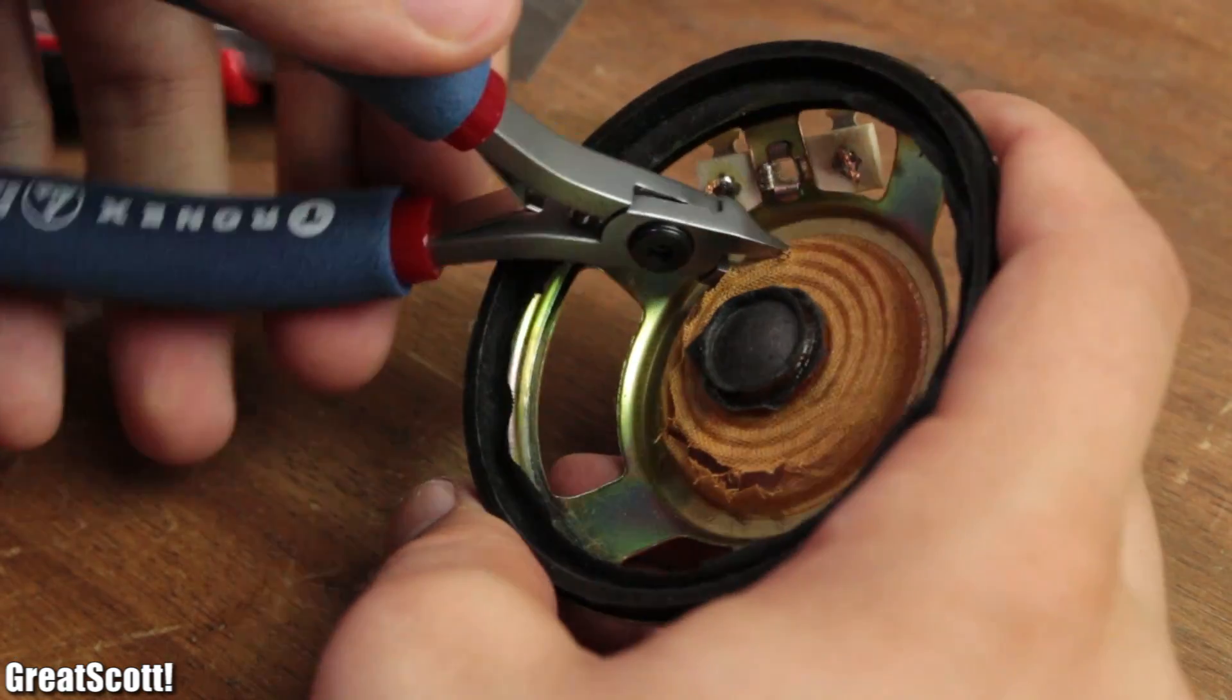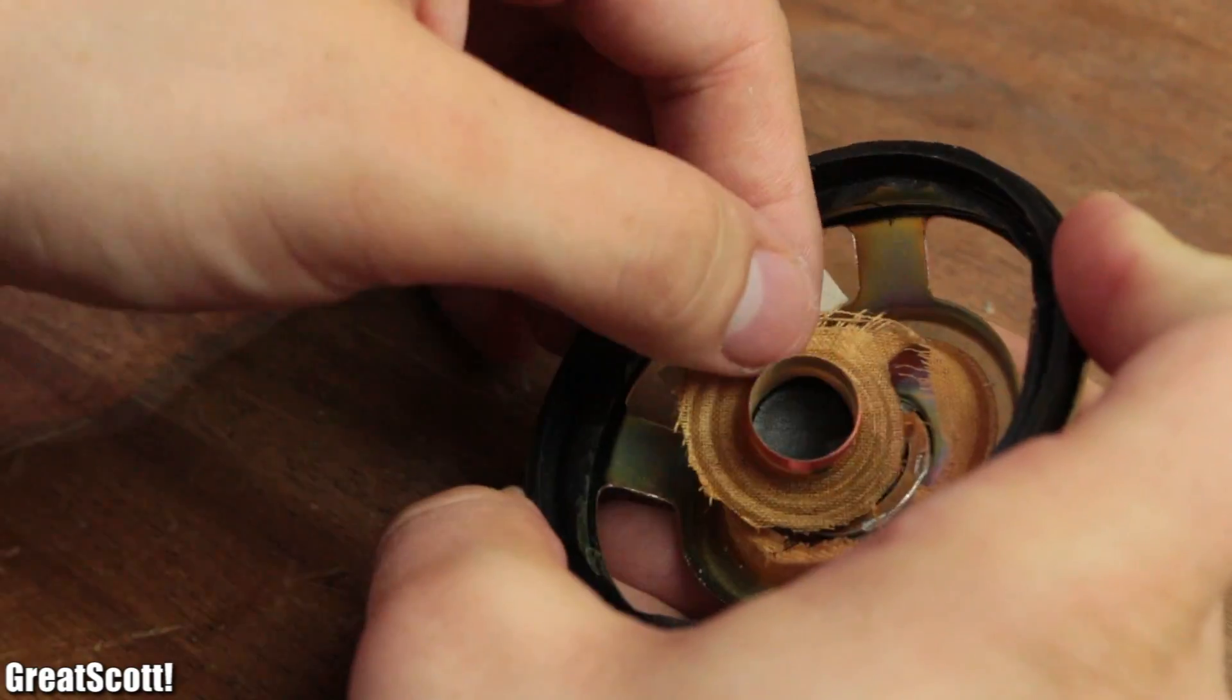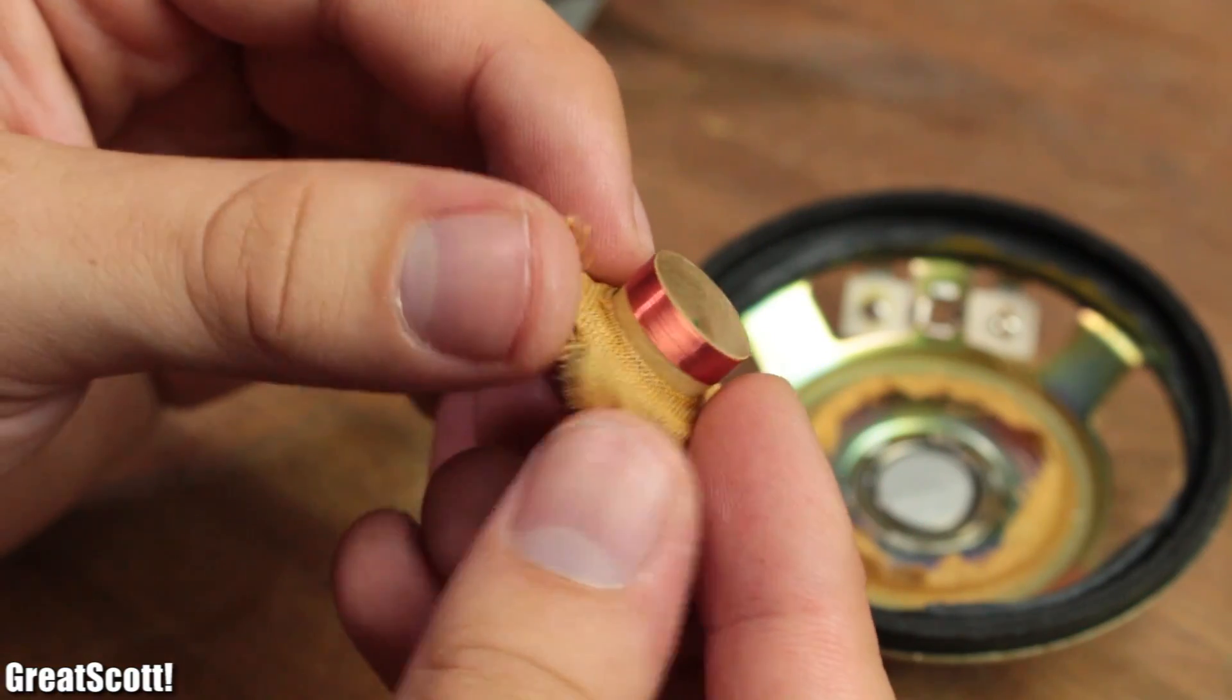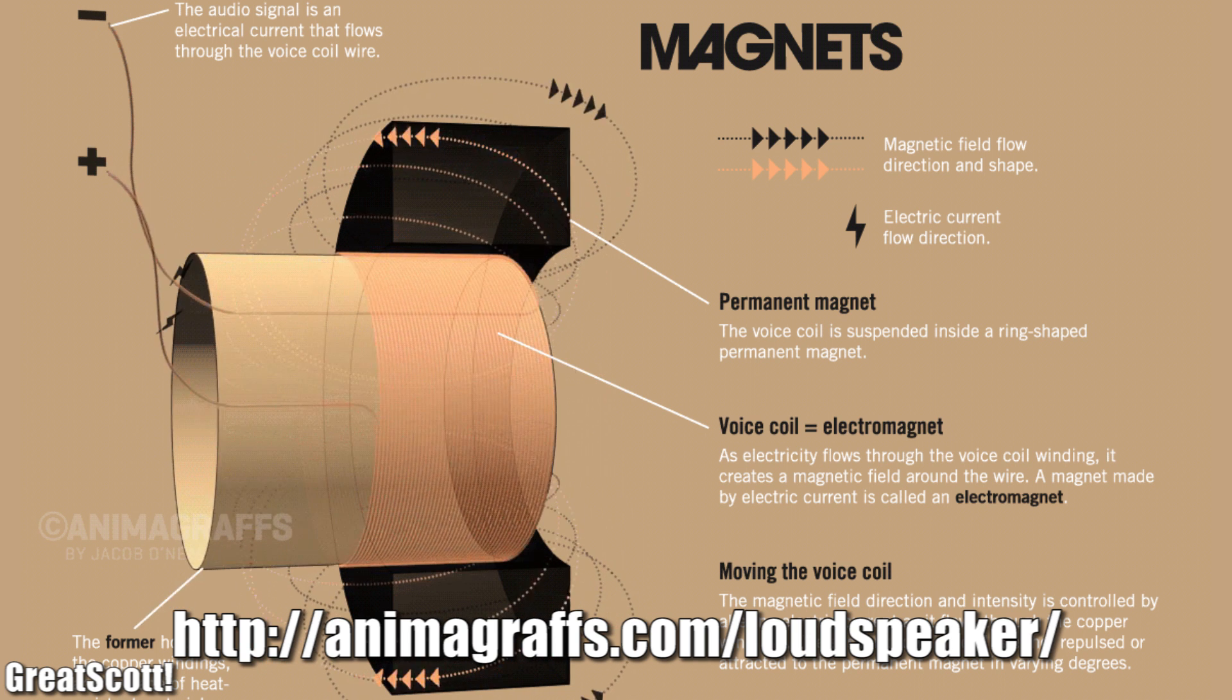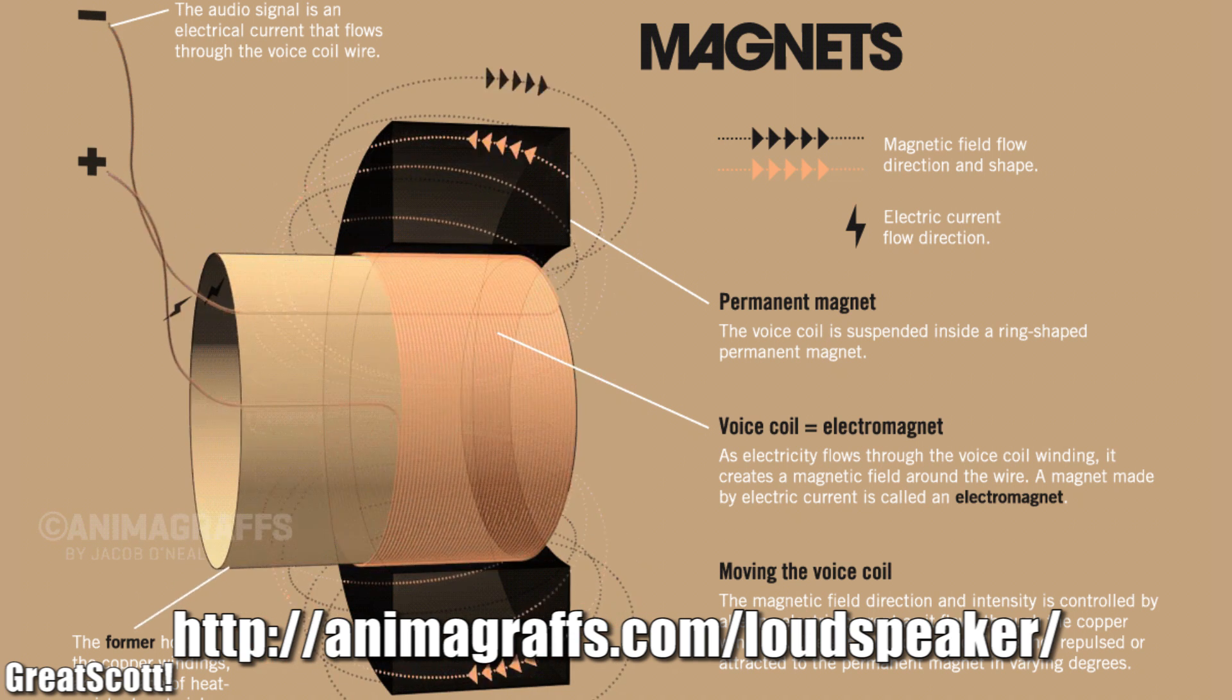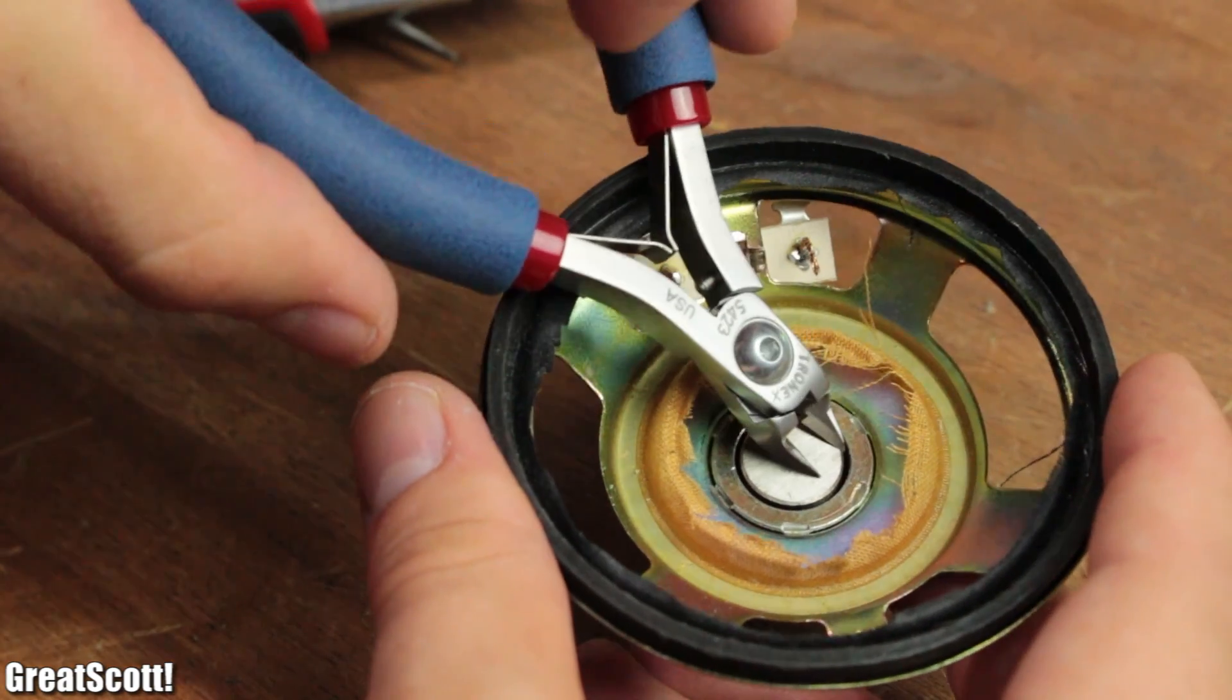Let's firstly find out how a normal speaker works. We can see that there is a coil, which moves a former back and forth due to the polarity changes of the magnetic fields, which it creates in the middle of magnets.